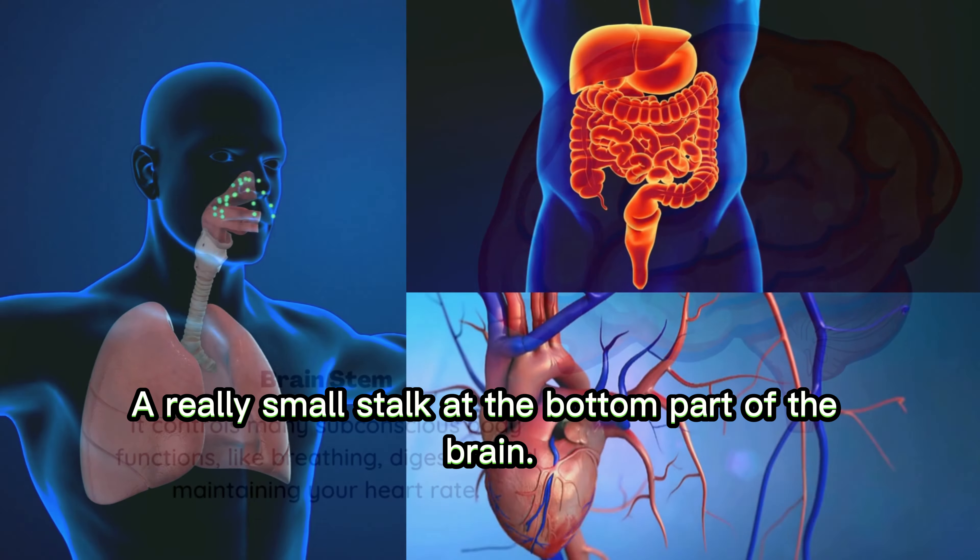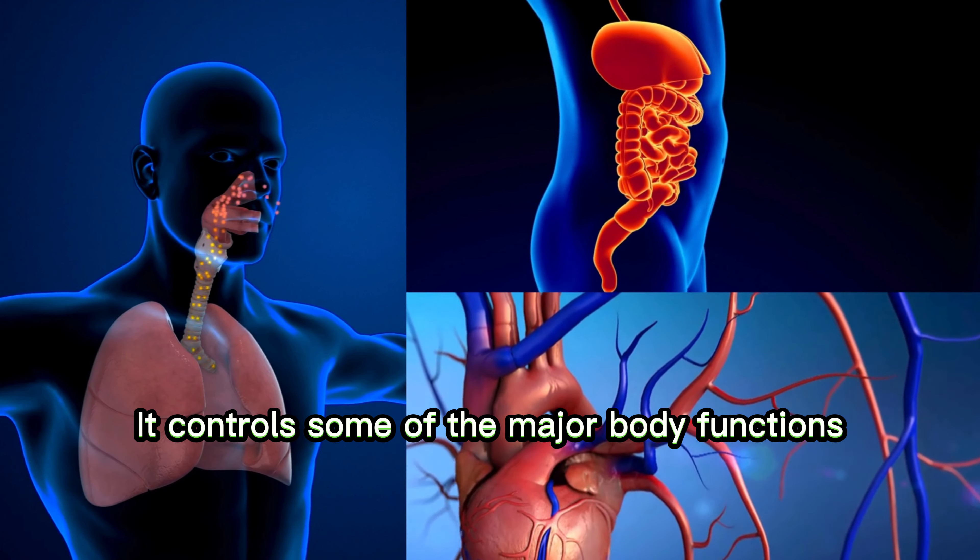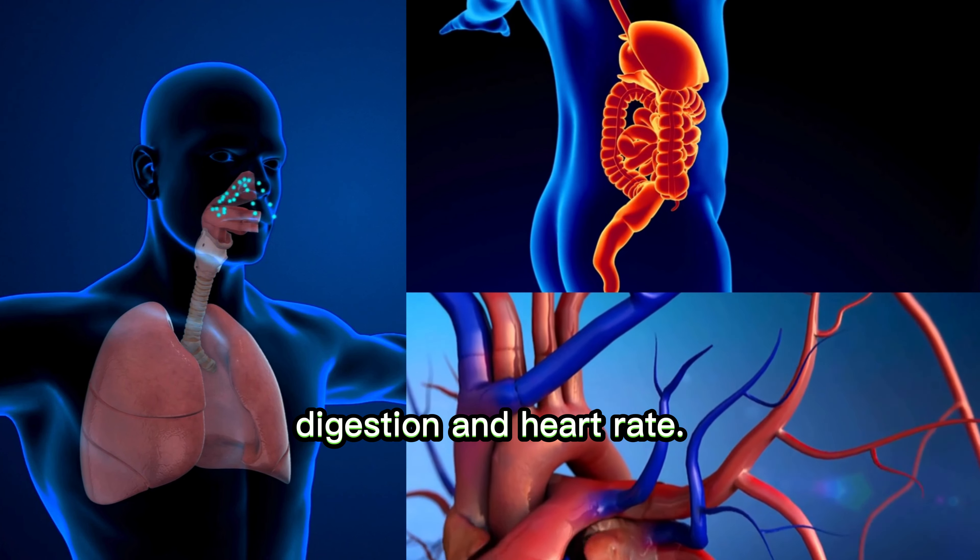Next we have the brain stem, a really small stalk at the bottom part of the brain. It controls some of the major body functions like breathing, digestion, and heart rate.